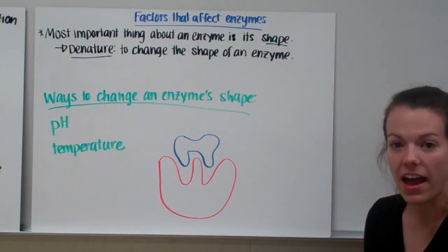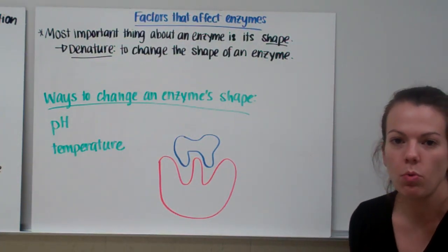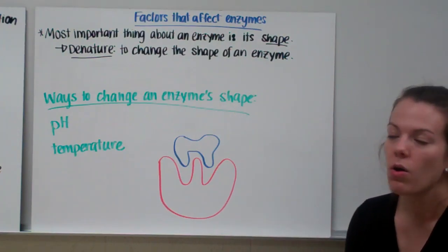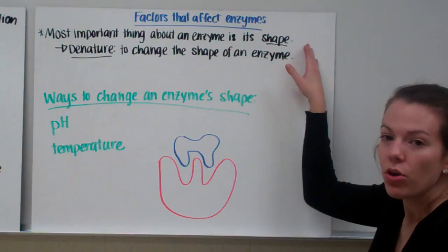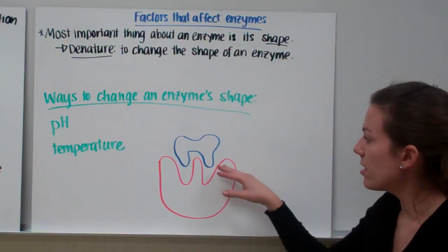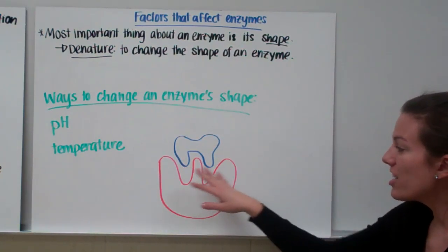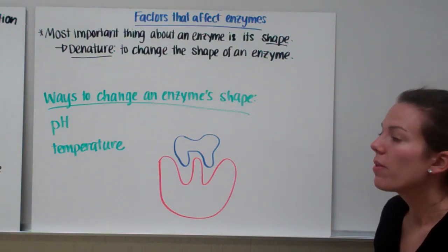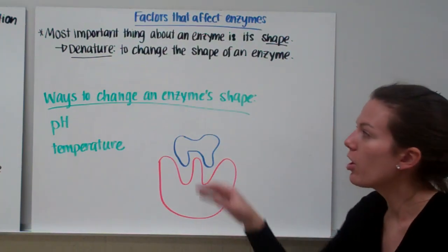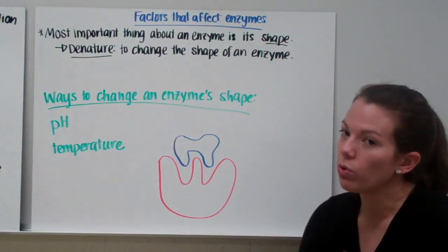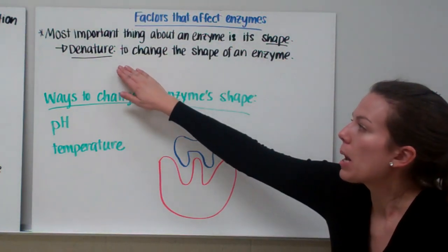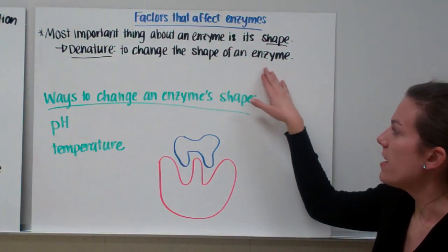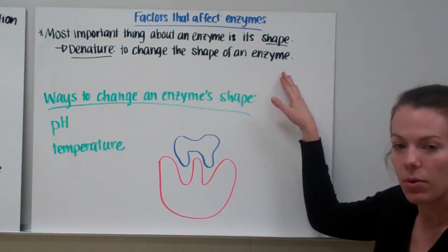Finally, let's discuss some factors that affect enzymes. So what can make an enzyme work better or worse? The most important thing about an enzyme is its shape. Remember how the enzyme fits together with its substrate perfectly? But if we change that shape, then that enzyme's not going to work anymore. Whenever we change the shape of an enzyme, we call that denature. Now, don't confuse that with decompose. Decompose means to rot. Denature means to change the shape of an enzyme. And if we change the shape, it will no longer work.